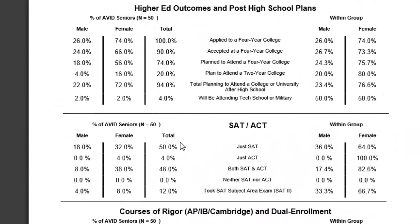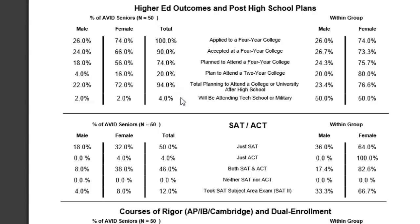The next section covers post-high school plans. You can see how many applied to a four-year college, were accepted to a four-year college, plan to attend a four-year college, plan to attend a two-year college, and the total overall between four-year and two-year — 94% at this particular school. And then another 4% who'll be going to a technical school or enlisting in the military.